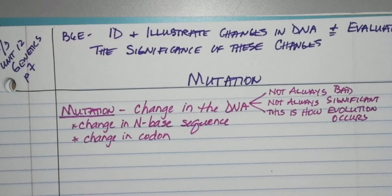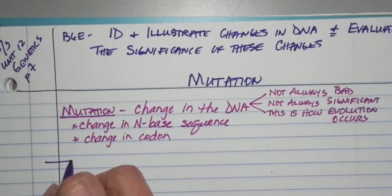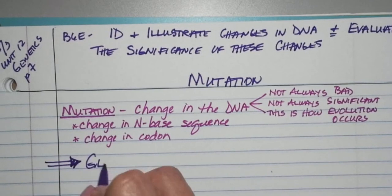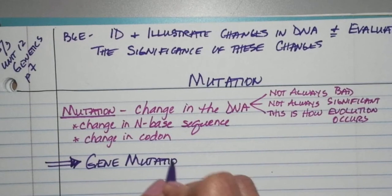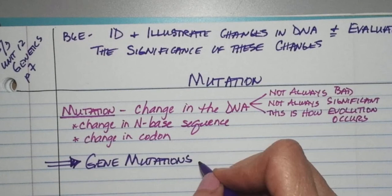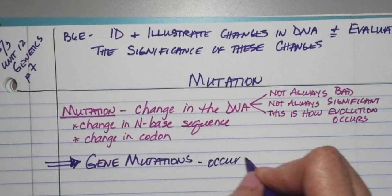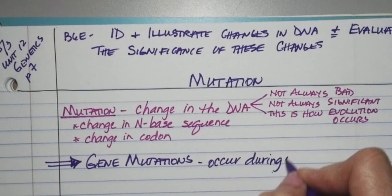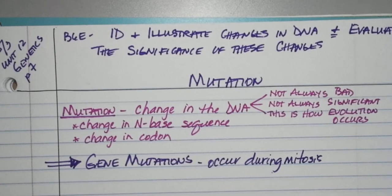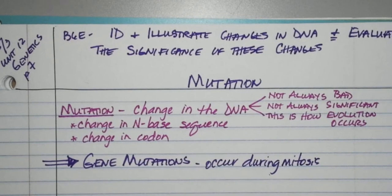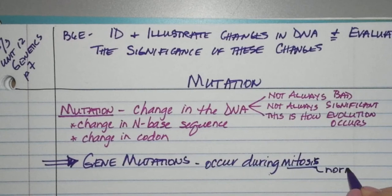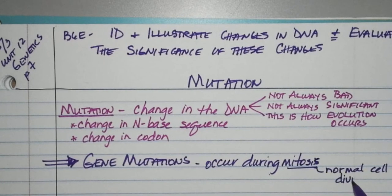So we're going to look at two major types, gene mutations and chromosome mutations. Gene mutations occur during mitosis. Do you remember what mitosis is? It's just your normal cell division. Your cells are going to grow, copy their DNA and split in two.